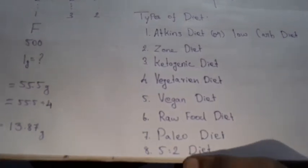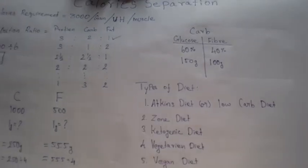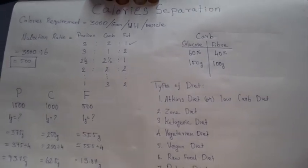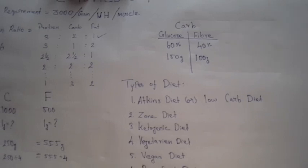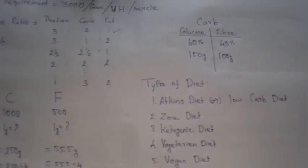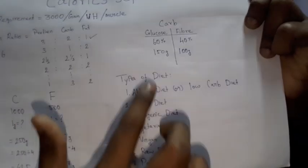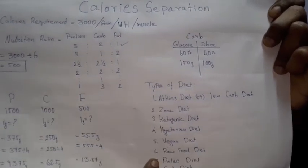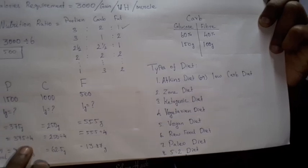The 5:2 diet — if you have this diet, you have to eat normally for 5 days, and you will eat less than 500 calories for 2 days. You will eat more than 5 days normally and less than 500 calories on the 2 days. This is the 5:2 diet. So we will explain in detail in this video. If you have any changes, then we will follow the diet and explain in detail.